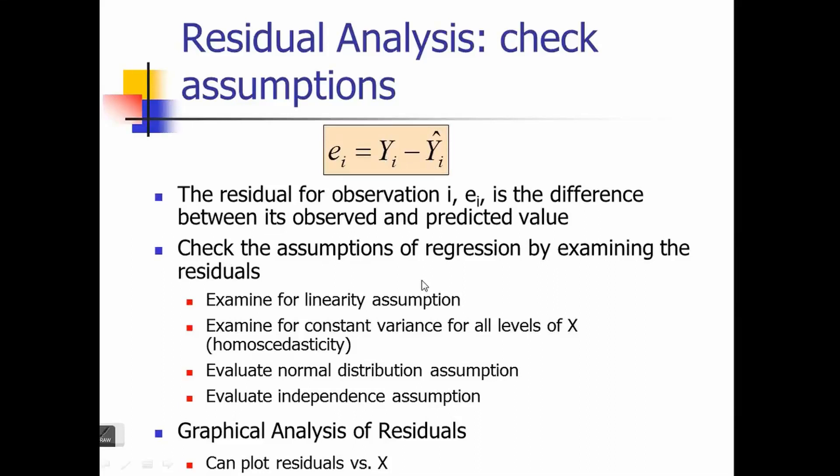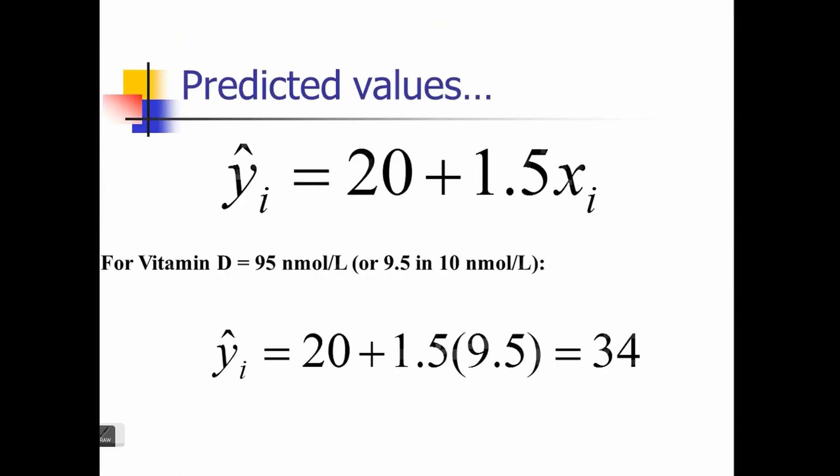Using the vitamin example, y equals 20 plus 1.5x. If vitamin D is 95, or 9.5 in our units, then y takes a value of 34. The actual value could be different. The residual is just the observed value minus predicted. So if the observed value is 36 and the predicted value is 34, then the error is 36 minus 34, which is 2.